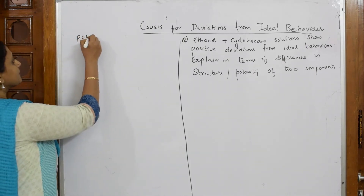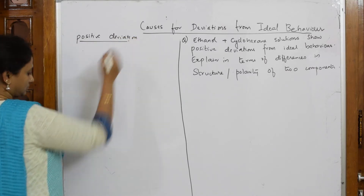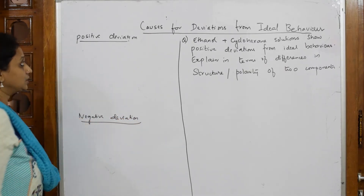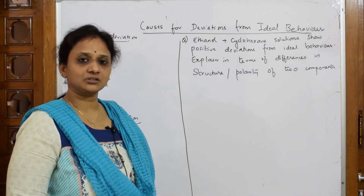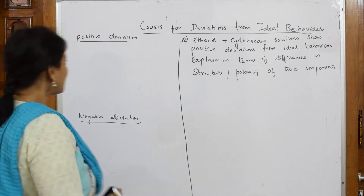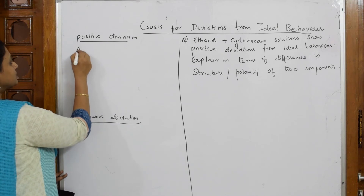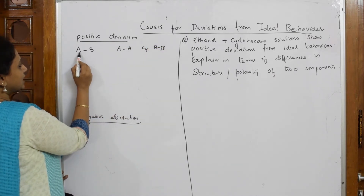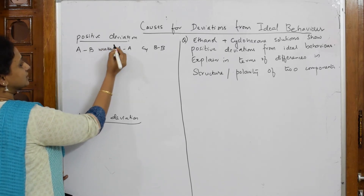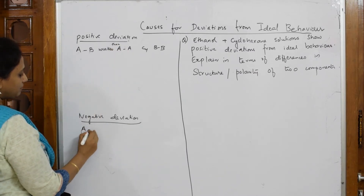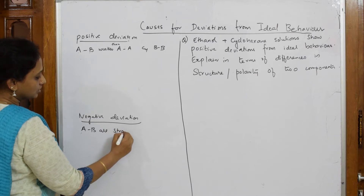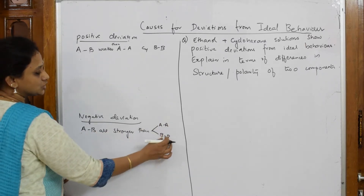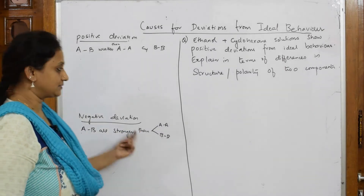Let us learn the cause. Suppose I take water and ethanol as an example — so I have two components, A and B: water and ethanol. Now suppose the interactions between A-B, A-A, and B-B — let us see the molecular interactions. Suppose the interaction between A and B is weaker. A-B interactions are weaker than A-A and B-B. This is inter-molecular versus intra-molecular interaction among themselves.